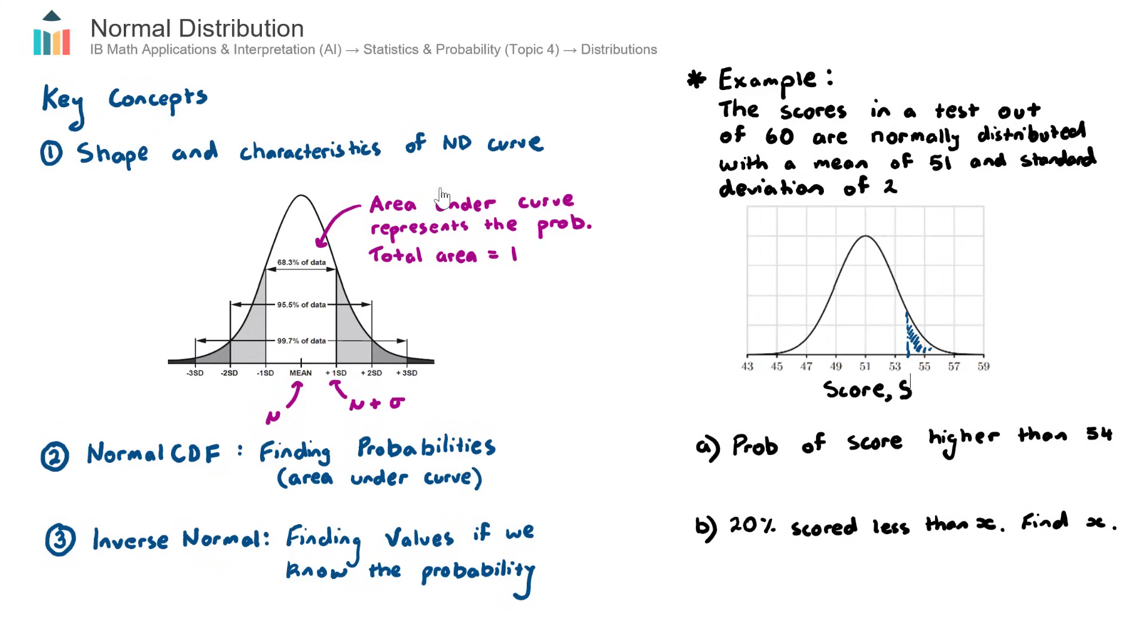Again, go back to this point here, the total area under the curve is equal to 1 or 100%. So what is this shaded region as a proportion of 1? Well, it looks pretty small. It could be say 0.1 or 10%, could be 0.15 or 15%. Well, we need to find out what this area is because the area represents the probability. And if we go back to the question, we're looking for the probability of a randomly chosen score being higher than 54.